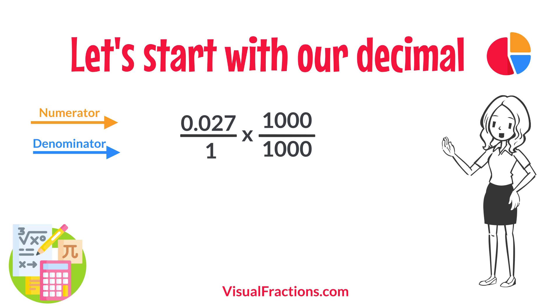So, 0.027 times 1,000 gives us 27, and 1 times 1,000 gives us 1,000. This translates 0.027 to the fraction 27 over 1,000.